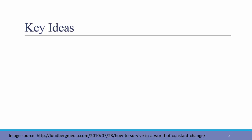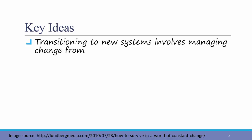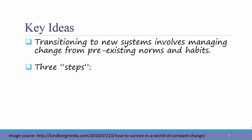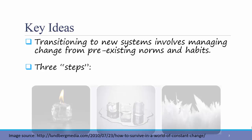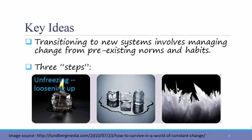The key ideas involved in migrating to a new system are as follows. Transitioning to new systems involves managing change from pre-existing norms and habits. There are three basic steps. First is unfreezing, or loosening up people's habits and norms. People get used to doing things a certain way, and when you implement a new system, it takes time to change and get them out of those habits. Hopefully the unfreezing started during the analysis and design phases.